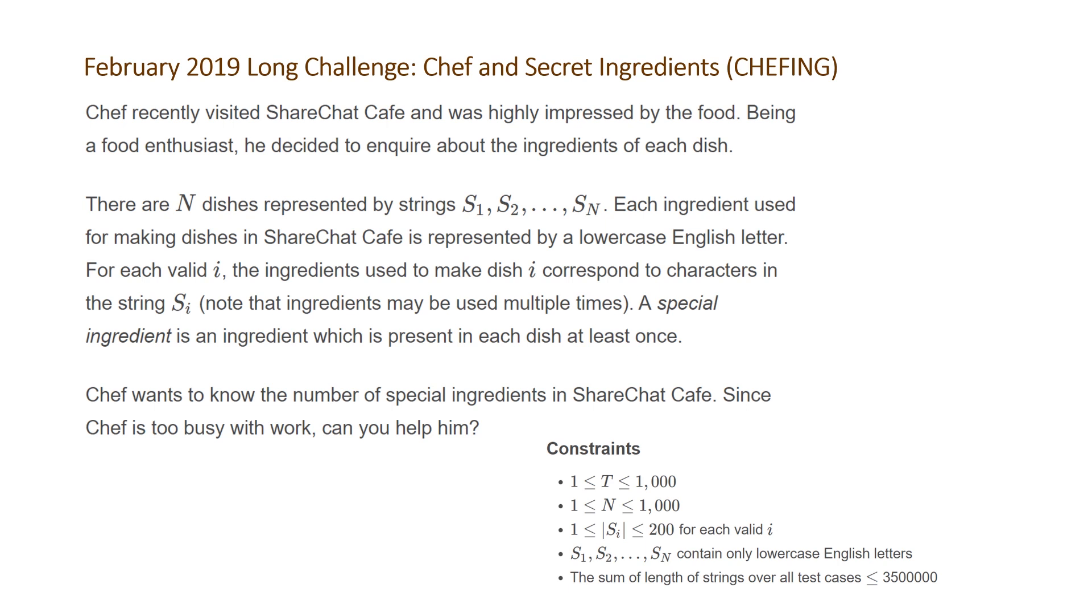The constraints for this problem are: t, the number of test cases, will be between 1 and 1,000. n, the number of dishes, will be between 1 and 1,000 as well. The length of S is going to be between 1 and 200, and the dishes are only going to contain lowercase letters. We're told that the sum of the length of all strings over all test cases is going to be less than 3.5 million.